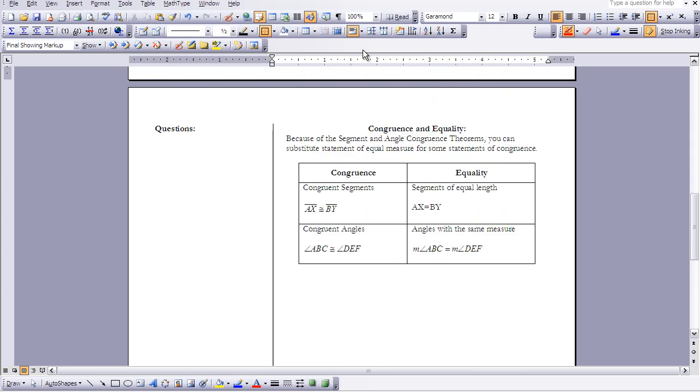Because of the segment and angle congruence theorems, we can substitute statements of equal measure for statements of congruence. So as you can see in this chart, if we have two figures that are congruent, the congruent statement looks like AX with the segment over it is congruent to segment BY. So notice the notation, we have the segment bar over the top with the congruent symbol.